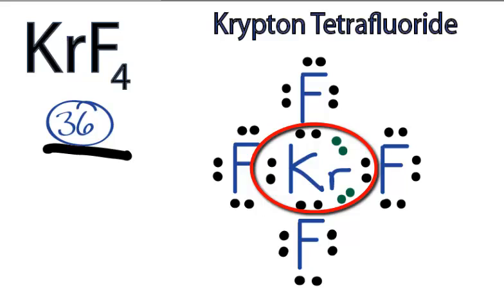If you check the formal charges, each of these atoms will have a formal charge of 0. So this is the Lewis structure for KrF4. Thanks for watching.